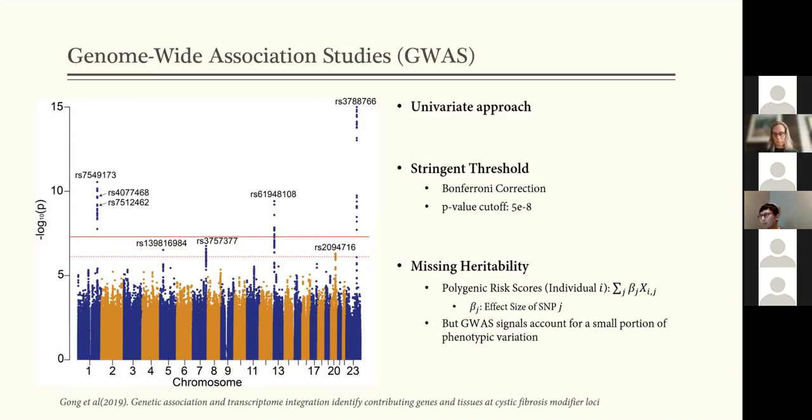For prediction, we simply weight the selected variants based on the estimated effect size. The problem is that if our goal is to predict, then those GWAS signals alone account for too small of a proportion of phenotypic variation.